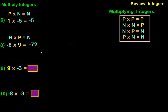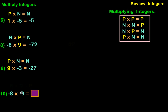For number 9, we have a positive times a negative, so our answer is going to be negative. 9 times 3 is 27, so negative 27. And for number 10, we have two negatives — an 8 and a 3. The rule we're using here is two negatives make a positive, so it's 8 times 3 is 24.